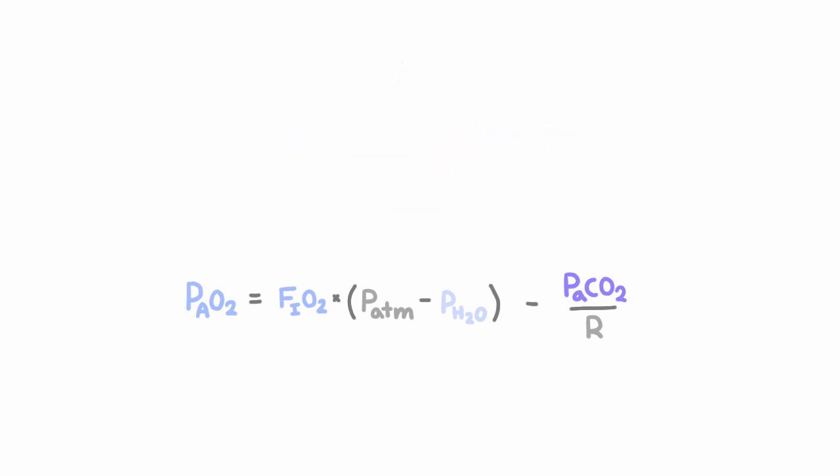Now let's break each of these terms down into more detail. In the first one, FiO2 is the fraction of the gas we're breathing that's composed of oxygen, and that's usually around 0.21 for room air. P atm is the atmospheric pressure, which is 760 millimeters of mercury at sea level.